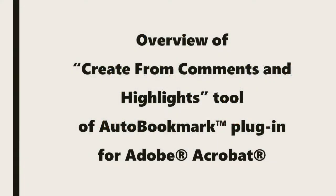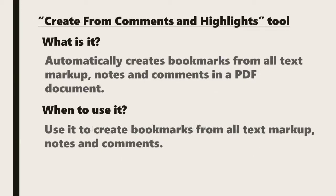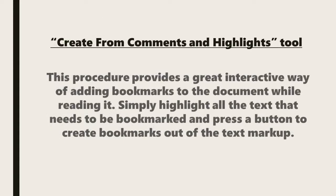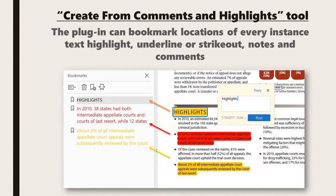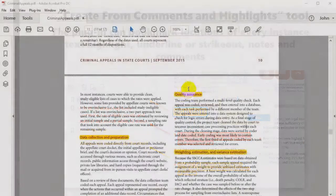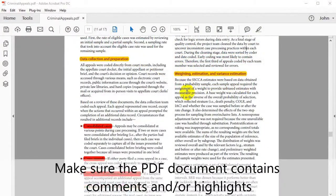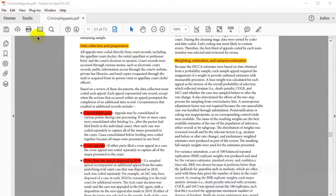Now let's look at an overview of the Create from Comments and Highlights tool for the Auto Bookmark plugin. This tool automatically creates bookmarks from all text markup, notes, and comments in the PDF document. It works by highlighting all text in need of being bookmarked and pressing a button to create bookmarks out of the text markup. The plugin can bookmark locations of each piece of text that's been highlighted, underlined, or struck out, as well as notes and comments. Make sure the PDF you're using contains some comments or highlighted text.